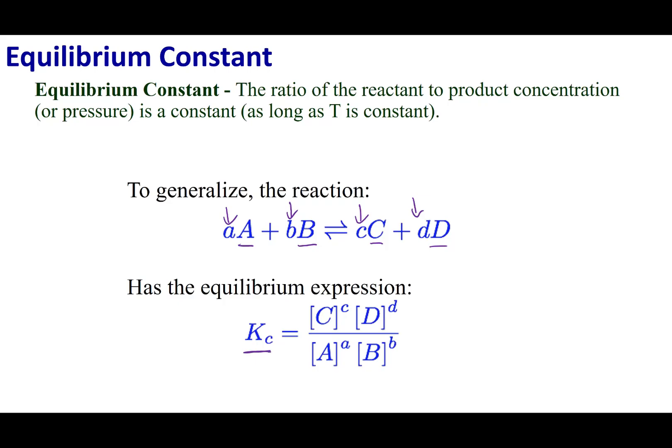The equilibrium constant is going to equal my products, C times D, divided by my reactants, A times B. But I'm going to raise everything to their stoichiometric coefficients. Whatever number appears in the balanced chemical equation in front of C, that's what I'm going to raise C to, and I'm going to do that to all of the things in my equilibrium expression. This is usually denoted as KC because it is based off a concentration. Usually the states of A, B, C, and D will be aqueous, or dissolved in solution, so you will have a molarity involved. That's why you see everything in concentration brackets.